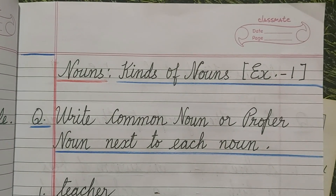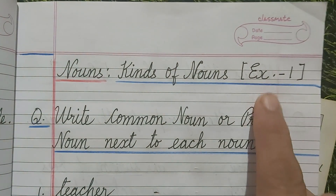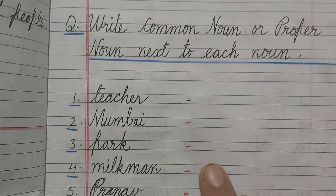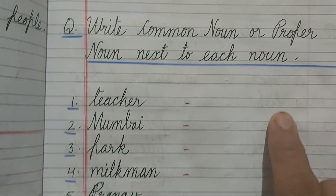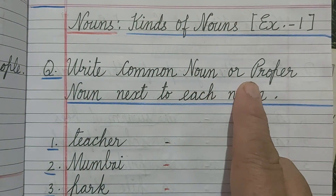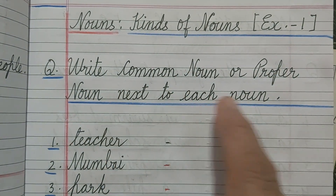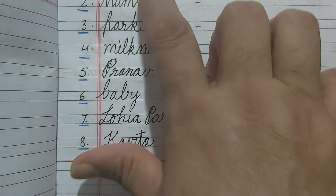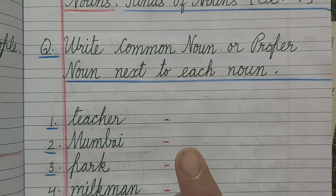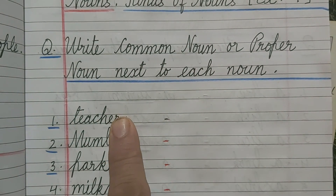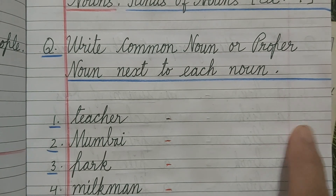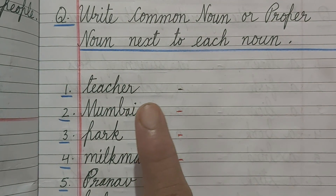This is a children's kinds of nouns exercise, number one. You have to write 'common' or 'proper' in front of the given word — write common noun or proper noun next to each noun. You have to think whether it is common or proper and write down. Also learn the spelling of common and proper noun.